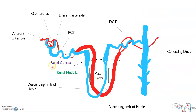So another schematic of the nephron — from the efferent arterioles, the glomerulus, afferent, PCT, renal cortex, renal medulla in this region, the descending limb of Henle, the ascending limb of Henle, the distal convoluted tubule, and then we have the collecting duct.